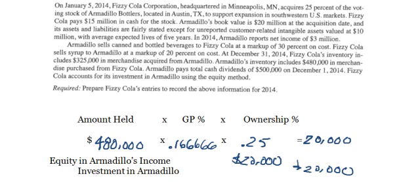And that should do it for this problem. Again, with this entry also, this is a deferral, not a permanent block. So once Armadillo sells that $480,000 in syrup, next year we would reverse this entry and go ahead and claim this $20,000 of income.